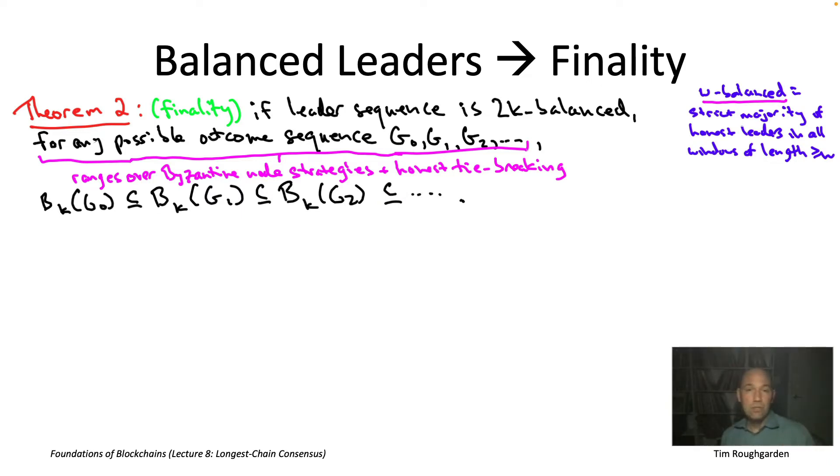So mathematically, if we look at the sequence b sub k of g sub i, so the longest chain of the current graph with the last k blocks lopped off, that set of blocks is only increasing over time. Blocks only ever get added to that set. They never get removed. So if each honest node takes b sub k of the current g as its local history, it is indeed an append only data structure. Things only ever get added. They never get rolled back.